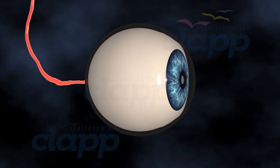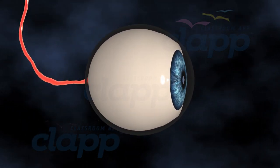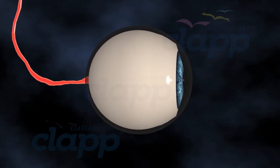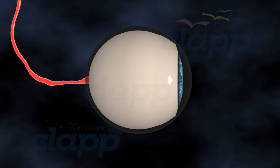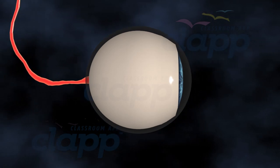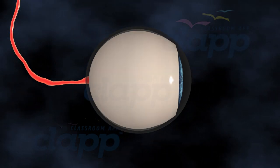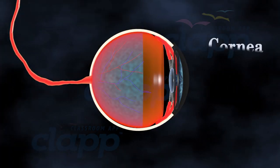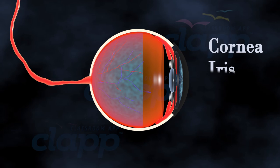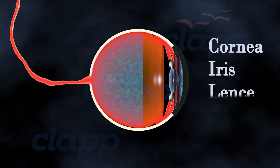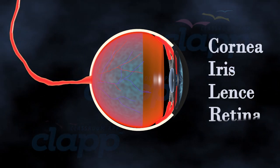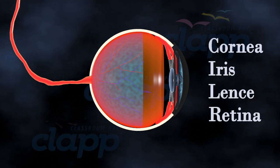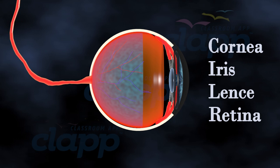The human eye is a remarkable organ that enables us to perceive light and color. It's made up of several parts, including the cornea, iris, lens, and retina, all working together to form our vision.